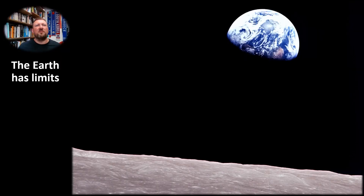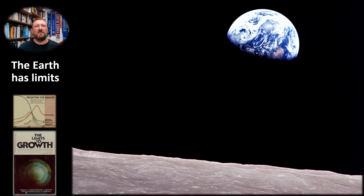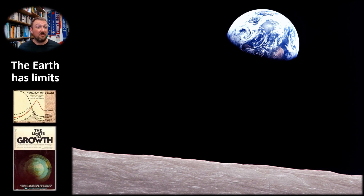This is the famous Earthrise photo taken by the Apollo 11 astronauts on the Moon in 1968, and it had a profound impact on people at the time as the first visual proof of spaceship Earth. What this image illustrates is a fundamental truism: the Earth is essentially a finite system with a limited capacity to supply resources to the life that inhabits it, and a limited ability to absorb wastes from the activity of those life forms, including humans.